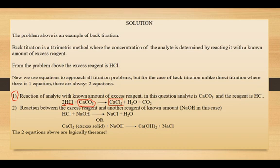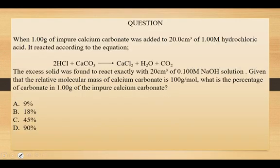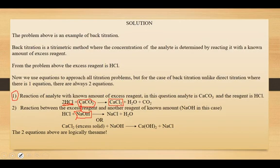The second reaction represents the reaction between the excess reagent that was left over and another reagent of known concentration. In this case, that reagent is sodium hydroxide — they gave you its concentration as 0.1 molar. So the second equation comes from the reaction of the excess hydrochloric acid with sodium hydroxide of known concentration.